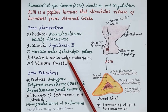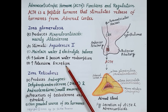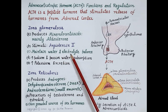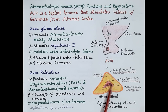Reabsorption of sodium is followed by the passive reabsorption of water. This sodium and water is reabsorbed from the nephron into the blood, so the reduced blood volume increases and becomes normal. Similarly, the reduced blood pressure increases and becomes normal. Aldosterone also increases excretion of potassium. This is how aldosterone regulates water and electrolyte balance.